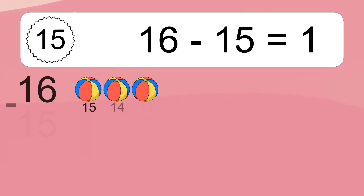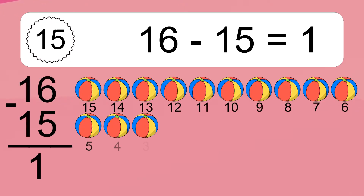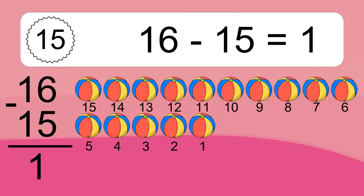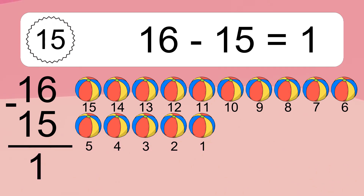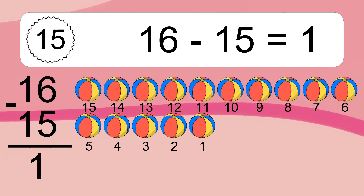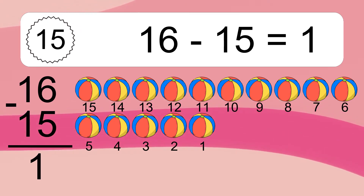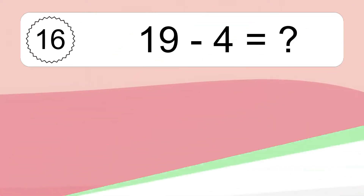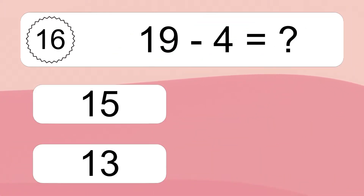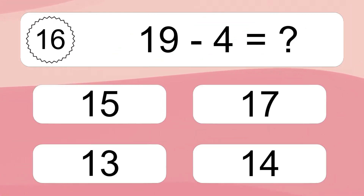16 minus 15 equals what? 16 minus 15 equals 1. Let's count it: 15, 14, 13, 12, 11, 10, 9, 8, 7, 6, 5, 4, 3, 2, 1.